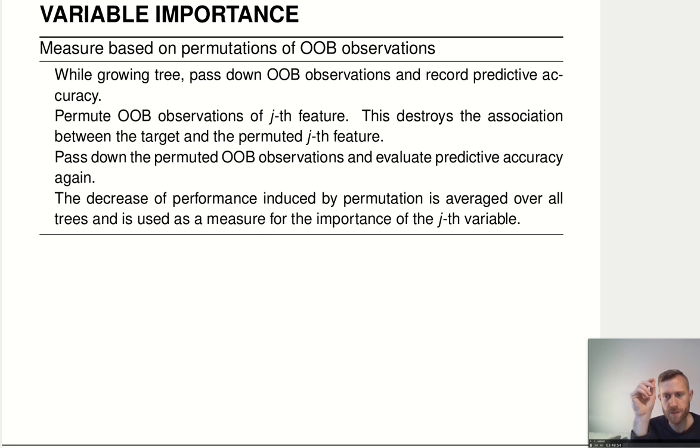We generate predictions for all the out-of-bag observations and we evaluate how well we're doing in terms of predictions. And then, what we do is, we take one of the features, and we just shuffle it around randomly in the out-of-bag observations. So we take essentially the test dataset that we just evaluated the predictive accuracy for, and we just destroy one of these columns. By randomly permuting it, shuffling the values around, any association between the feature and the target variable has to be destroyed. If we just randomly shuffle it around, any pattern that was there before, isn't there anymore afterwards.